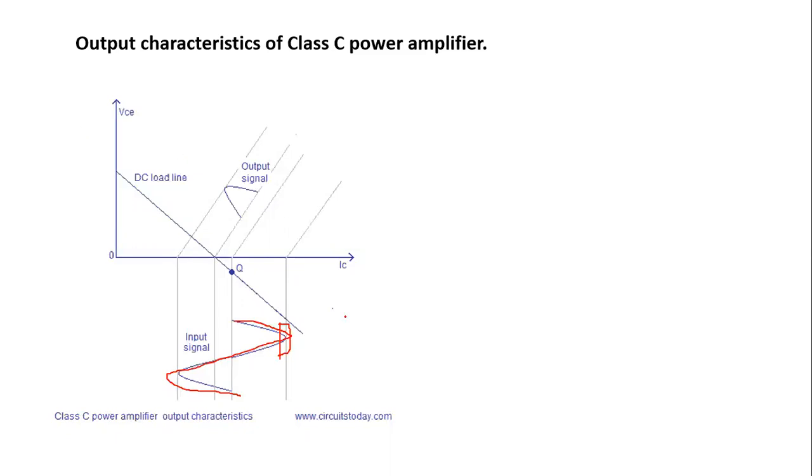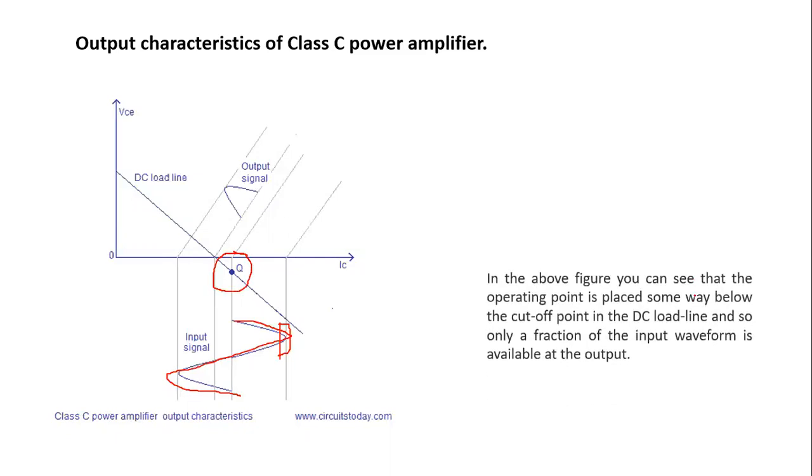In the above figure, you can see that the operating point is placed somewhere below the cutoff point in the DC load line. So only a fraction of the input waveform is available at the output. Only a fraction is available and then gets amplified.